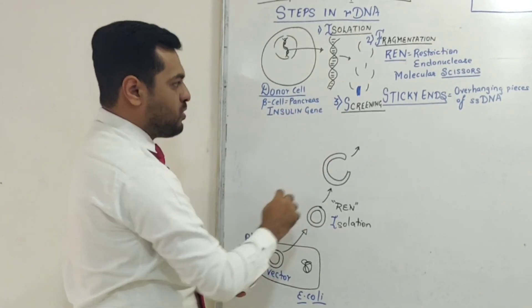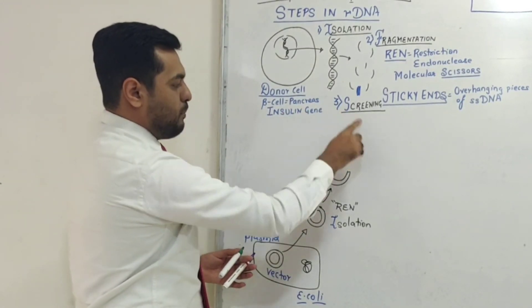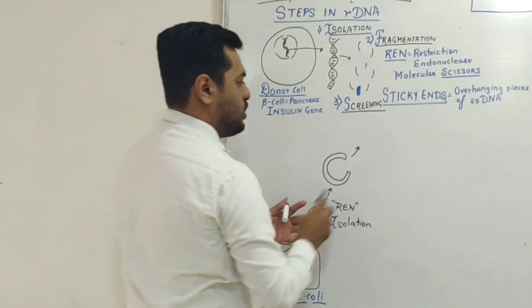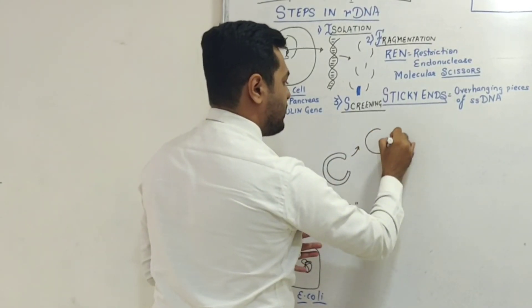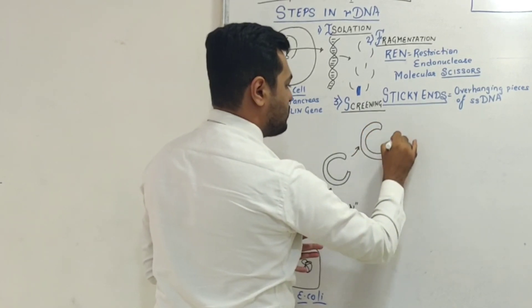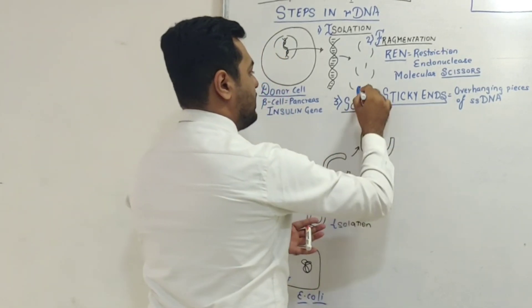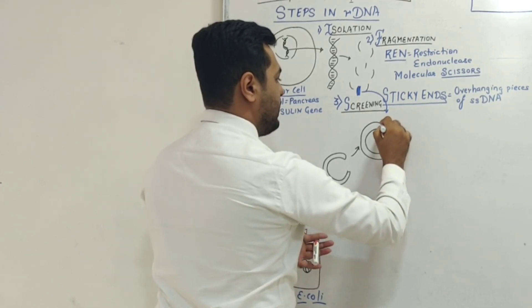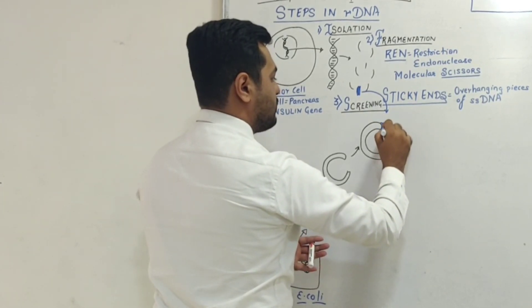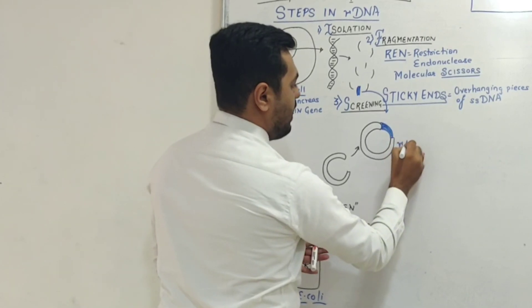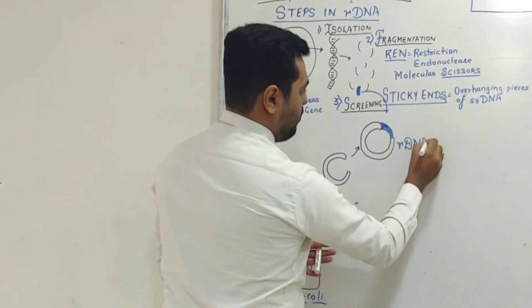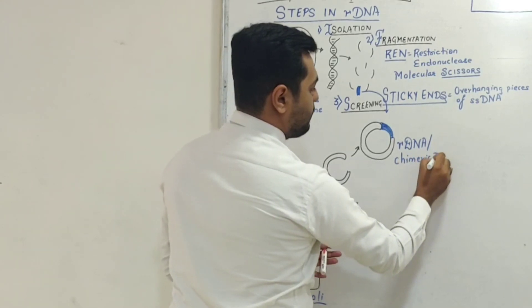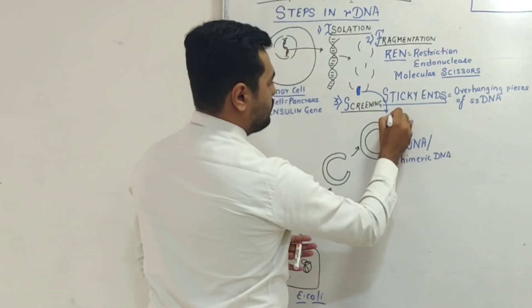Once we get the desired gene, we combine it with the plasmid whose part we have also cut and which also has overhanging sticky ends. This is the plasmid with which I have combined the desired gene. The DNA I obtained is now called the rDNA - recombinant DNA or chimeric DNA. This is step number four.